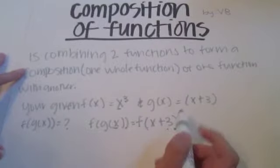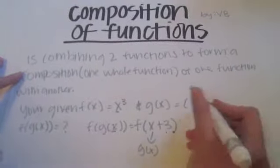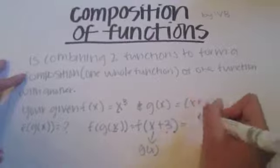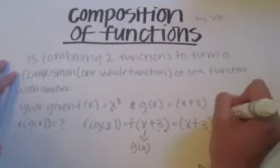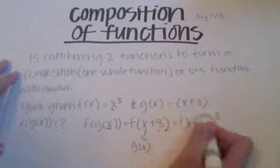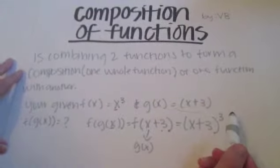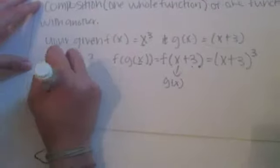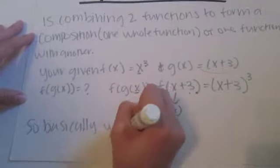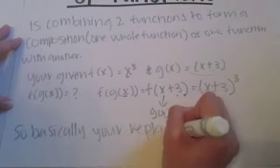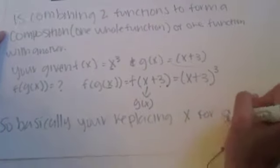You replace the x in f of x with your g of x, which is x plus three. So this whole thing equals x plus three cubed. Basically g of x goes into f of x and you cube it — you're replacing x with g of x.